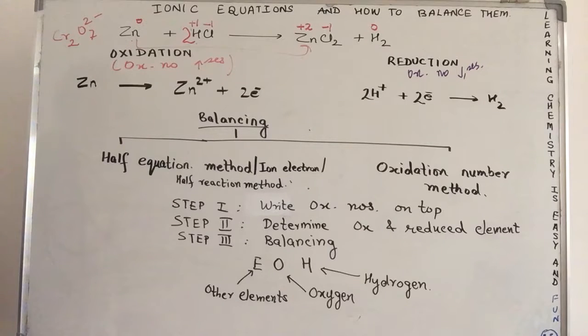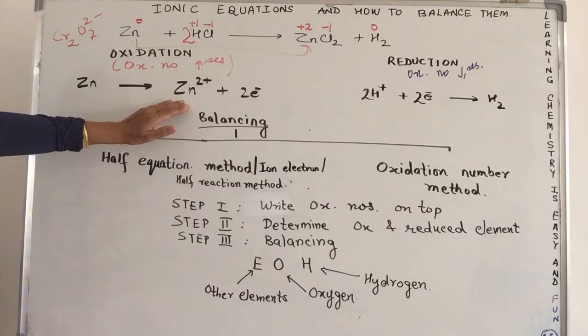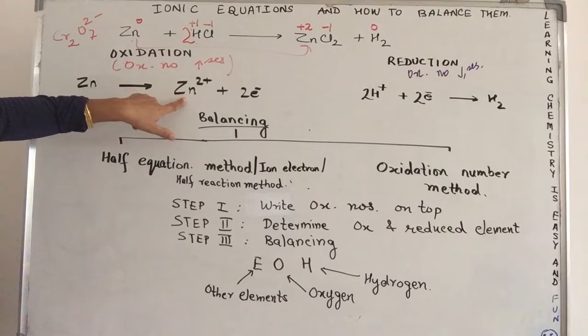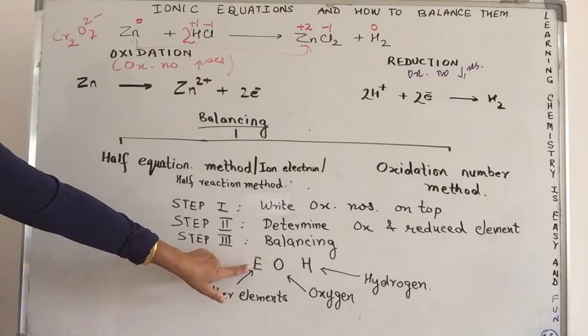Only slight variation will be there in the two methods. Otherwise, the basic principle remains the same. For this equation, the balancing is very simple because zinc and zinc is already balanced. So, my E is already balanced.